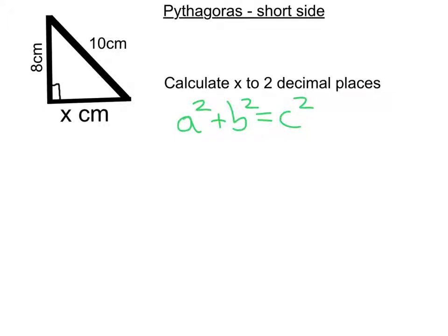So I've written out my formula, so let's substitute in our numbers. I've got my two short sides, so we've got x squared plus 8 squared equals our longest side, that's 10 squared.